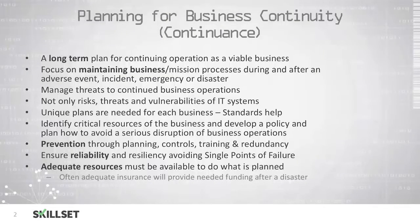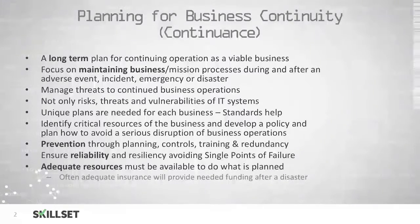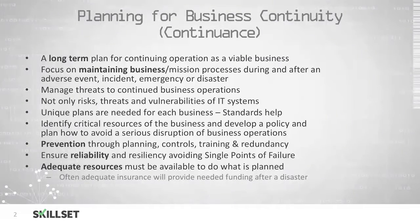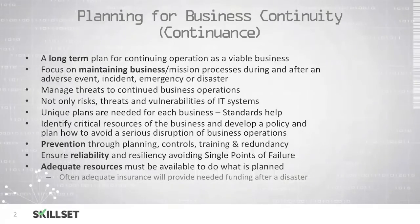First, we'll have to identify our critical resources and then develop a policy in order to avoid serious disruption of business operations. We can attempt to prevent disasters through planning, controls, and training. We can attempt to ensure reliability and resiliency by avoiding single points of failure, but we must make sure that we have enough resources in case a disaster does occur.